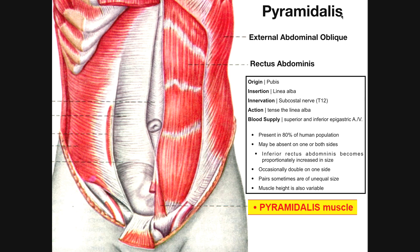When we think of anterior abdominal wall muscles, what comes to mind? Well, there are four of them. We have the rectus abdominis, which is the medial one — you can see that right here. Then we've got the three lateral ones, and from superficial to deep, they are external abdominal oblique, internal abdominal oblique, and then the transversus abdominis.